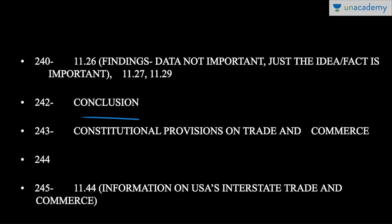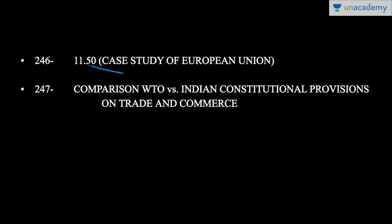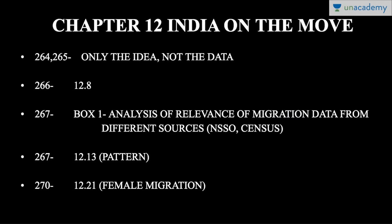Article 301 deals with freedom of trade, commerce, and intercourse. Article 302 deals with the power of Parliament to impose restrictions on trade, commerce, and intercourse. Article 303 deals with restrictions on the legislative powers of the Union and states with regard to trade and commerce. Article 304 deals with restrictions on trade, commerce, and intercourse among states. Paragraph 11.44 covers provisions in other countries including USA's interstate trade. Page 246 has paragraph 11.50 on the European Union case study, and page 247 compares WTO versus Indian constitutional provisions on trade and commerce.